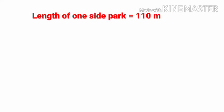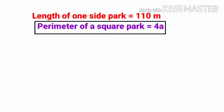So length of one side of the park equals 110 meter. Now apply the formula. Perimeter of a square park equals 4a, equals 4 into 110. 4 into 0 is 0, 4 into 1 is 4, 4 into 1 is 4, so 440 meter. So perimeter of the square park is equal to 440 meter.